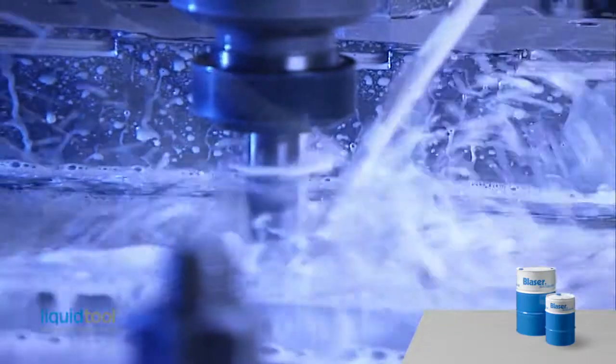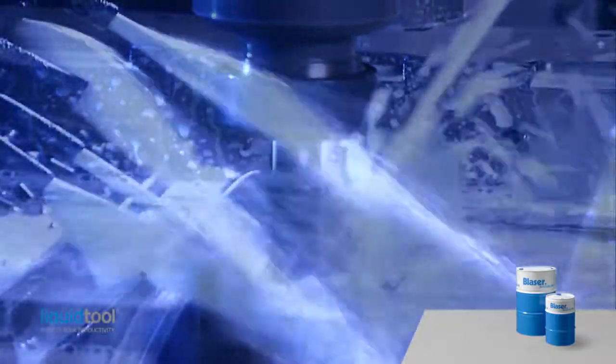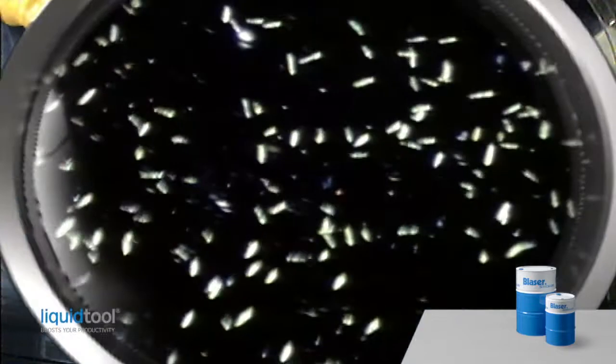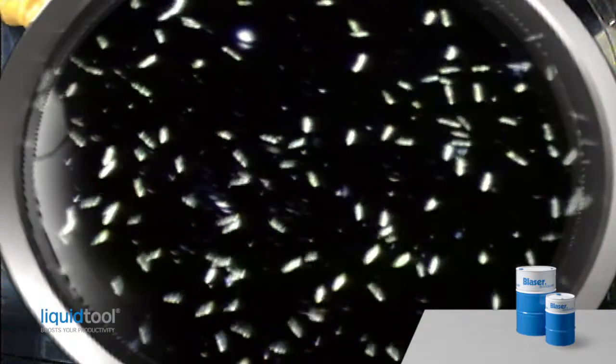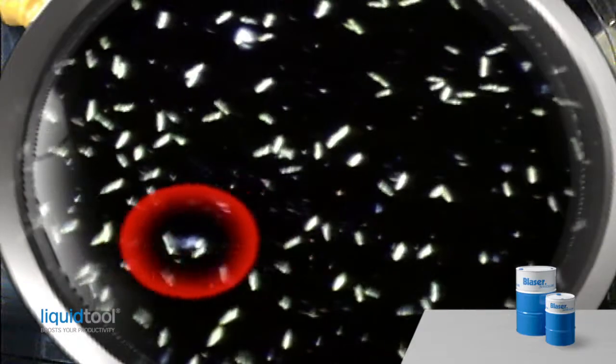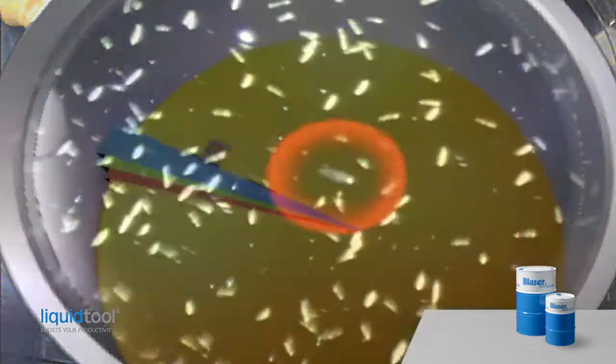Blasa deliberately excludes the use of bactericides in Blasocut emulsions. The Blasocut bio-concept regulates the population of harmless primary water bacteria in the emulsion to prevent the growth of undesirable foreign bacteria.